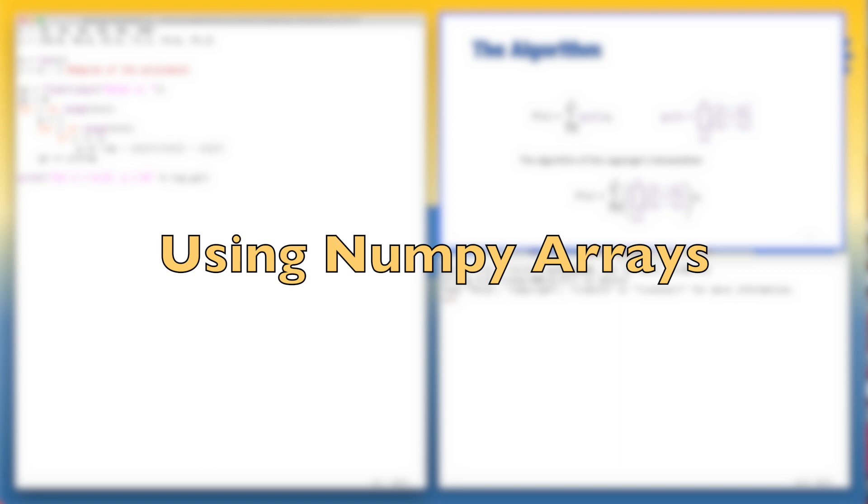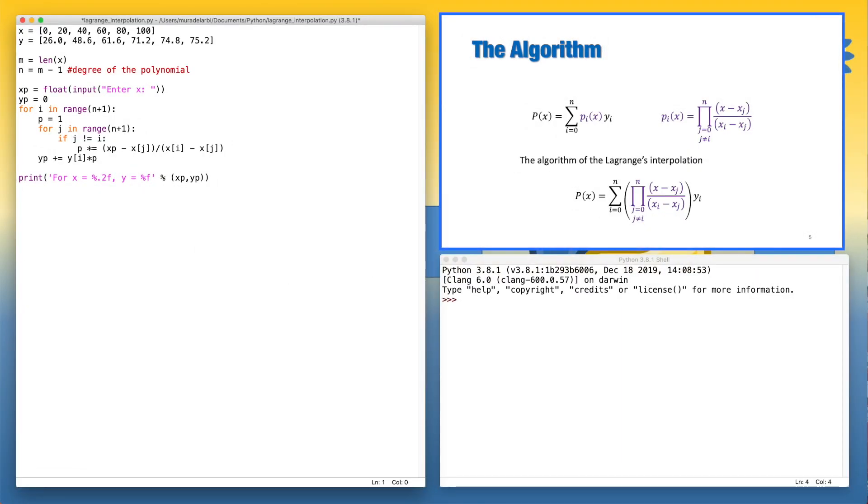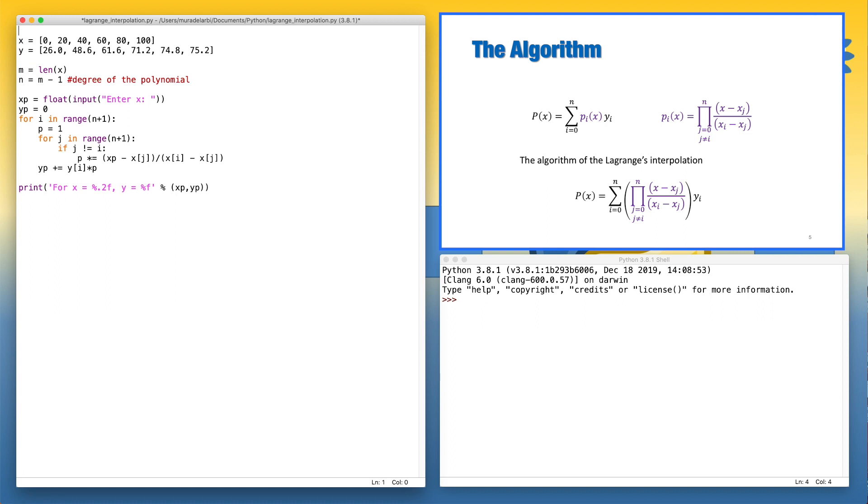Let's modify the code by using NumPy arrays. So, first of all, let's import NumPy. Then, we define x and y as NumPy arrays. Now, we will make a modification in the loops. And instead of using the indices, or the index i and index j, I'll try to use the values of x directly in the loop. So, that means we can remove or neglect the definitions of m and n.